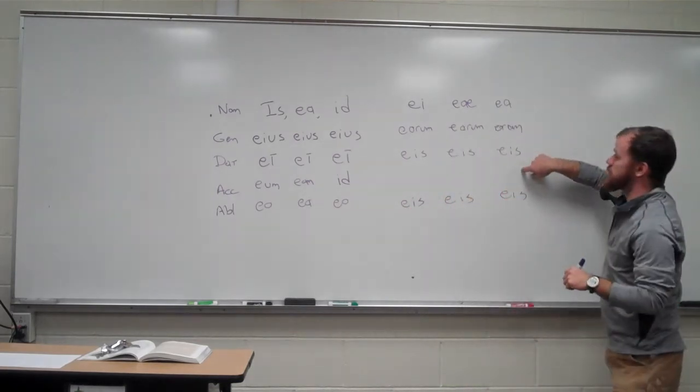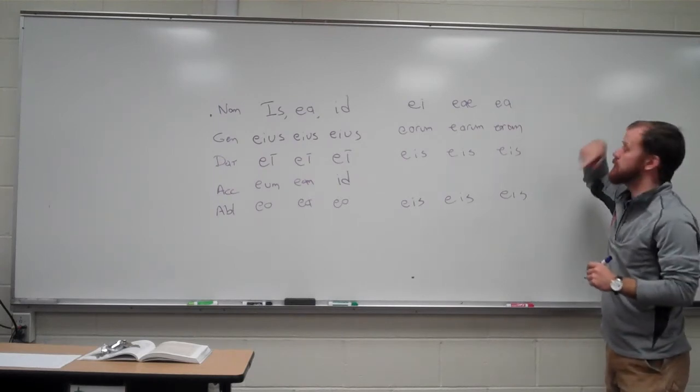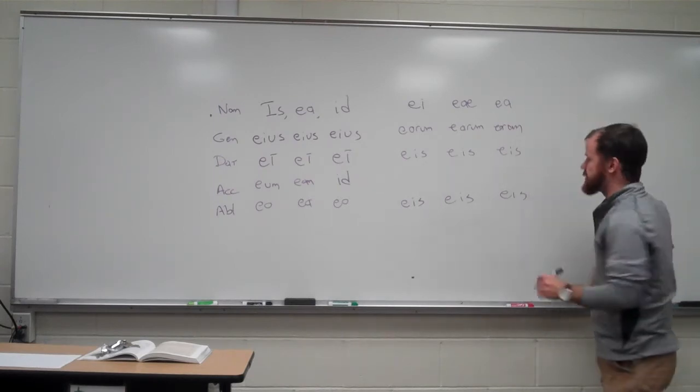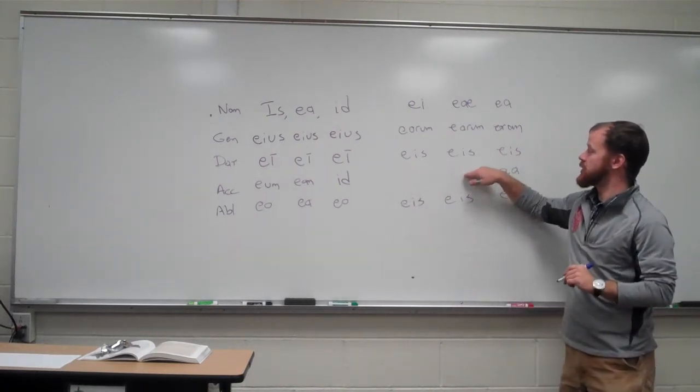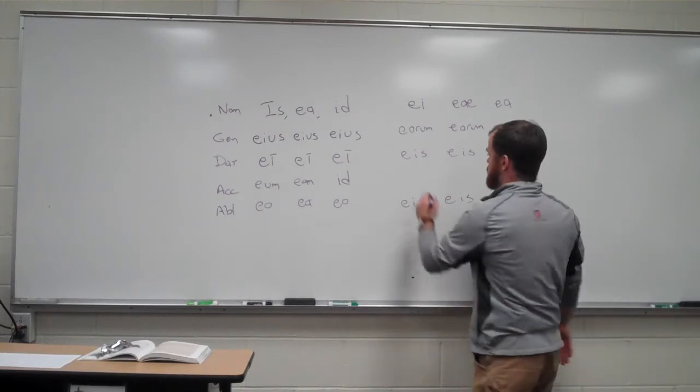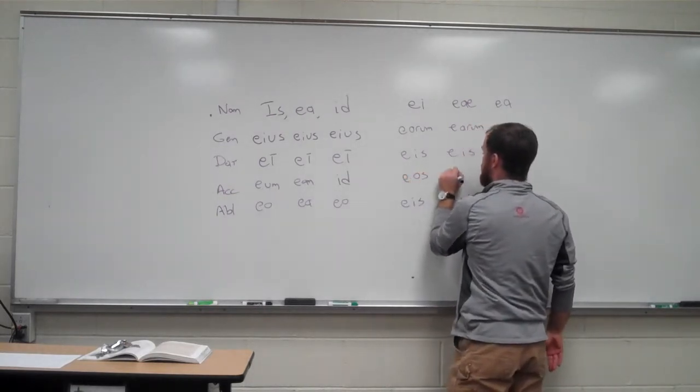Now we already know what the accusative neuter form is going to be. What's going to be repeated? Yes, it's going to be ea. And so now we just have to fill in accusative masculine and accusative feminine. Pretty simple, eos, eas.